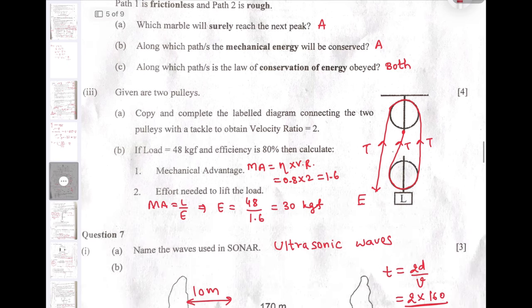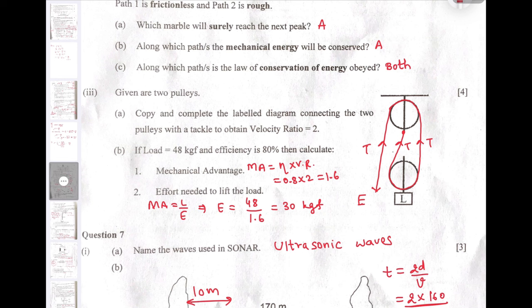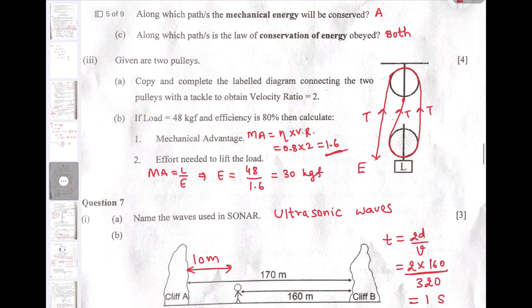Next, given are two pulleys. Copy and complete the label diagram connecting the two pulleys with a tackle to obtain velocity ratio 2. You can see the diagram here. If load is 48 kgf and efficiency is 80%, then calculate the mechanical advantage. So mechanical advantage is 1.6, and once we get mechanical advantage, we can easily find the effort 30 kgf.